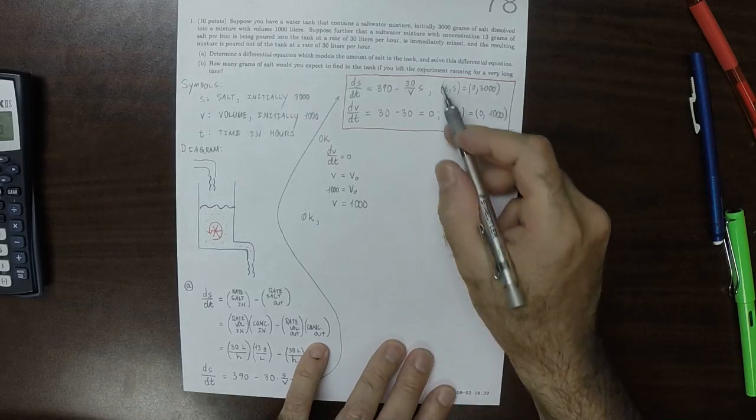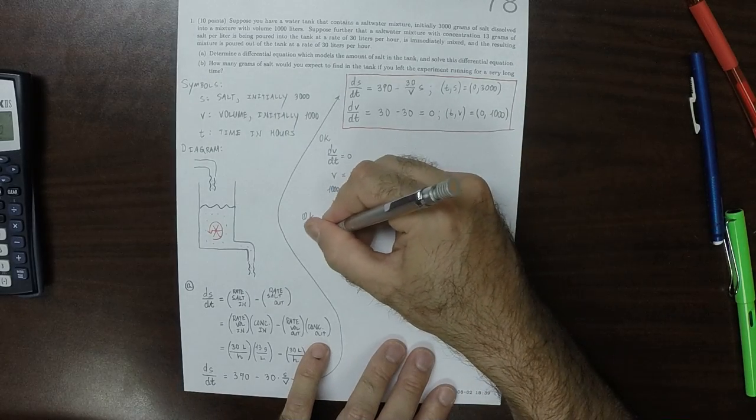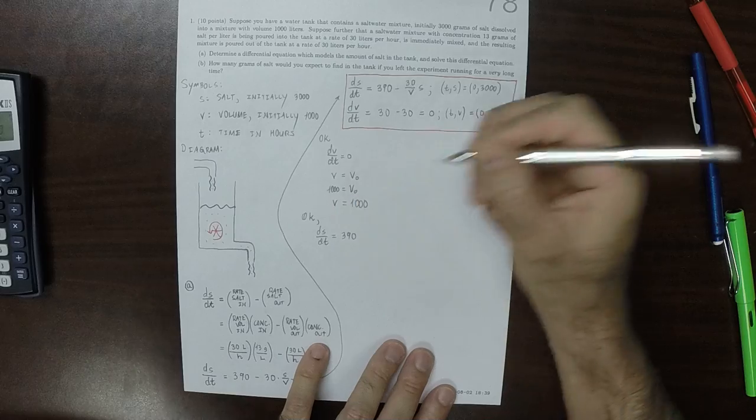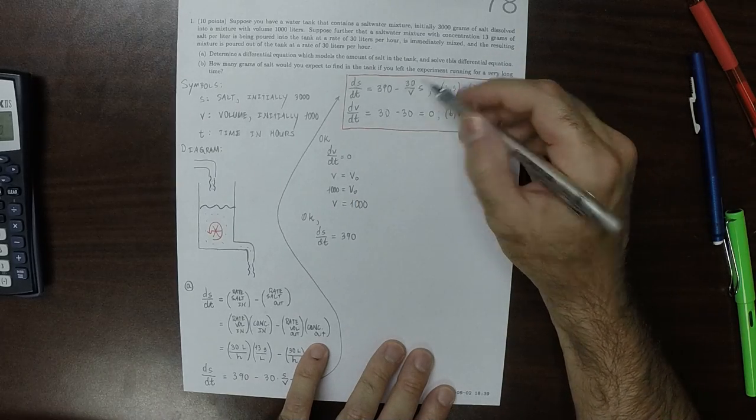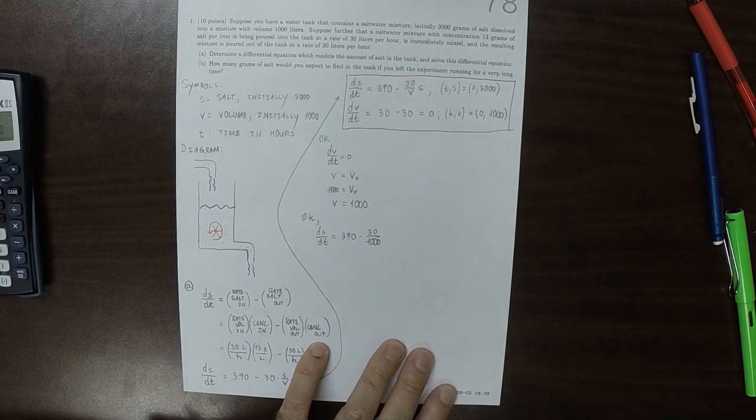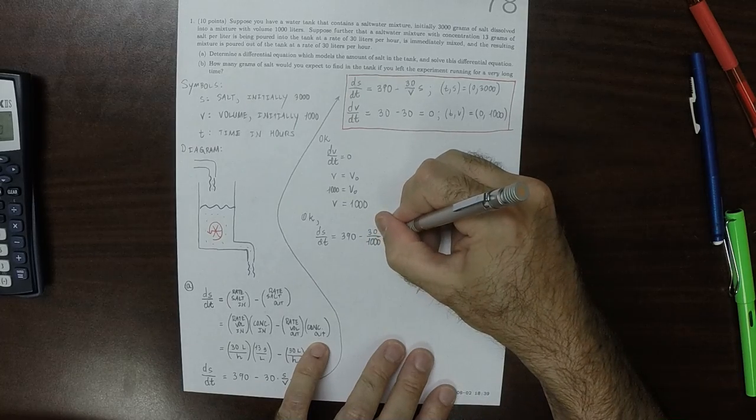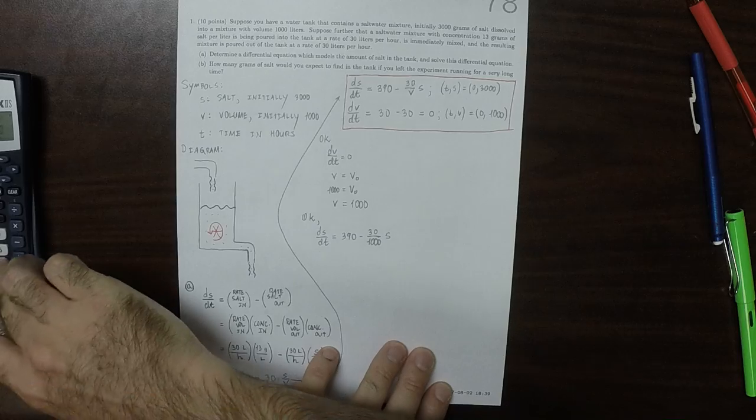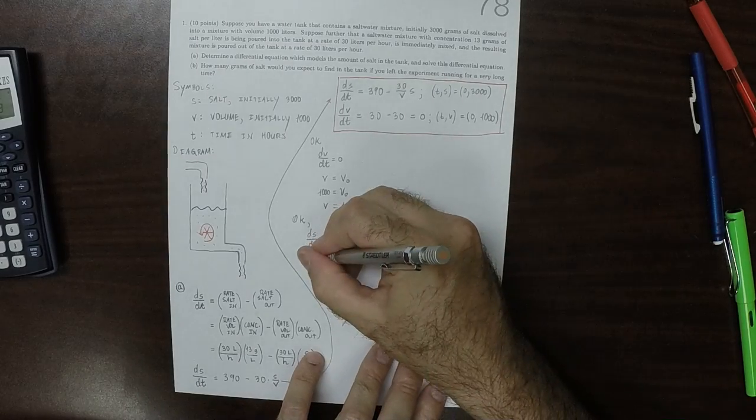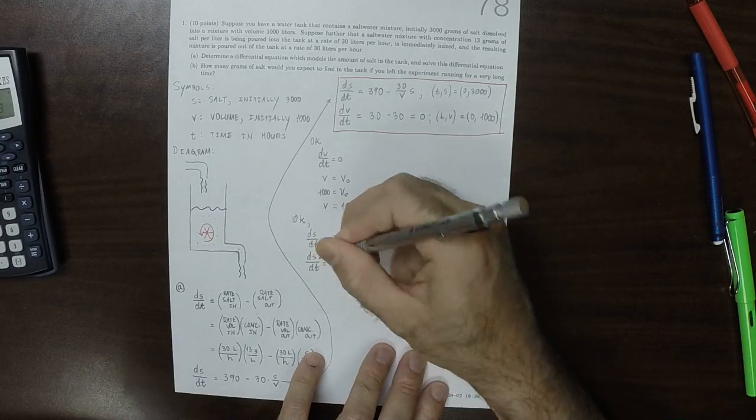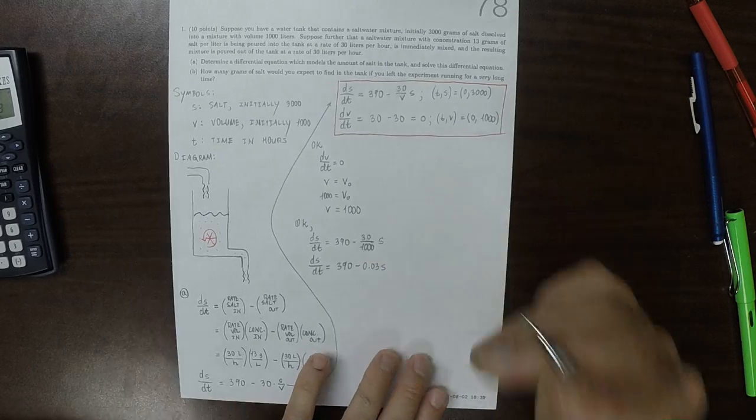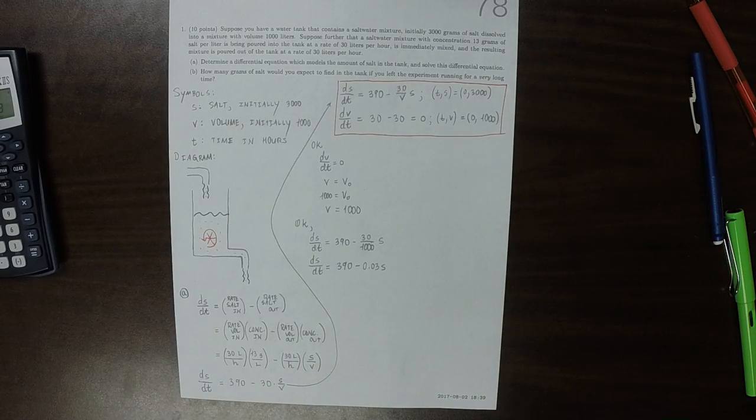So now we can plug that information into the differential equation for S. dS/dT is 390 and then minus 30 over 1000 times S. 30 over 1000 is 0.03, so dS/dT is 390 minus 0.03S. So now we need to solve this differential equation.